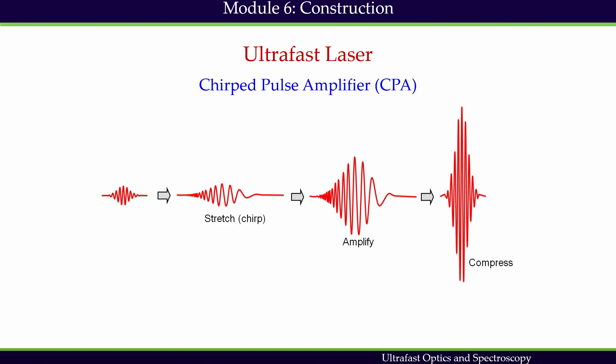How can the deleterious effects of high peak power be avoided during the amplification stage? Nearly all high power ultrafast laser systems make use of the technique called Chirped Pulse Amplification, or CPA. It has 3 steps. Step 1: the pulse coming from the oscillator, which is a less intense pulse, first needs to be stretched, so that the peak power can be reduced. Peak power is defined as energy per pulse E divided by delta T, where delta T is the duration of the pulse — defined as the full width at half maximum of the intensity profile.